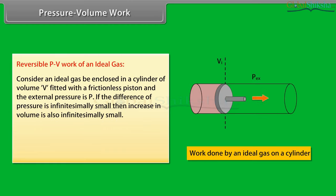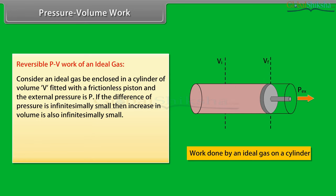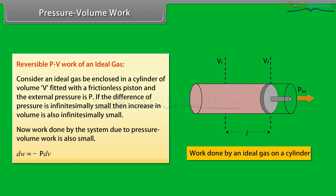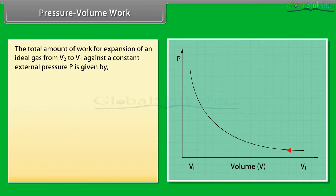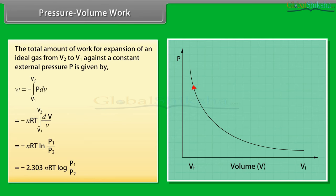Reversible PV work of an ideal gas: consider an ideal gas enclosed in a cylinder of volume V fitted with a frictionless piston under external pressure P. If the difference of pressure is infinitesimally small, the increase in volume is also infinitesimally small. The total amount of work for expansion of an ideal gas from V₁ to V₂ against a constant external pressure P is given by −2.303 nRT log(P₁/P₂).